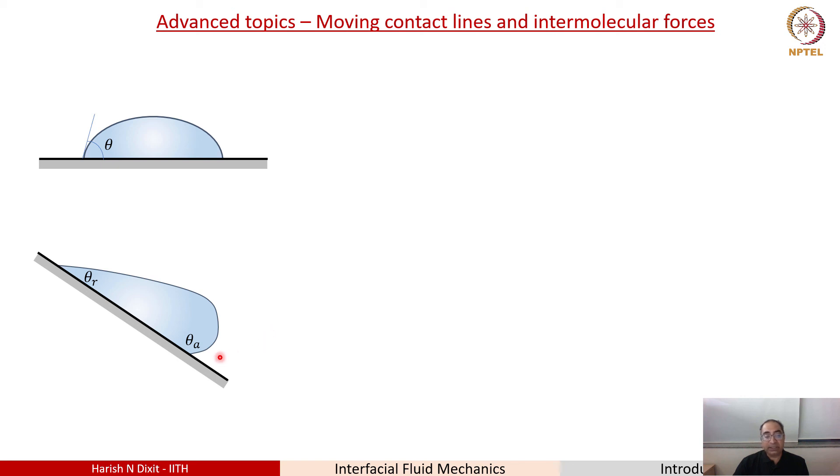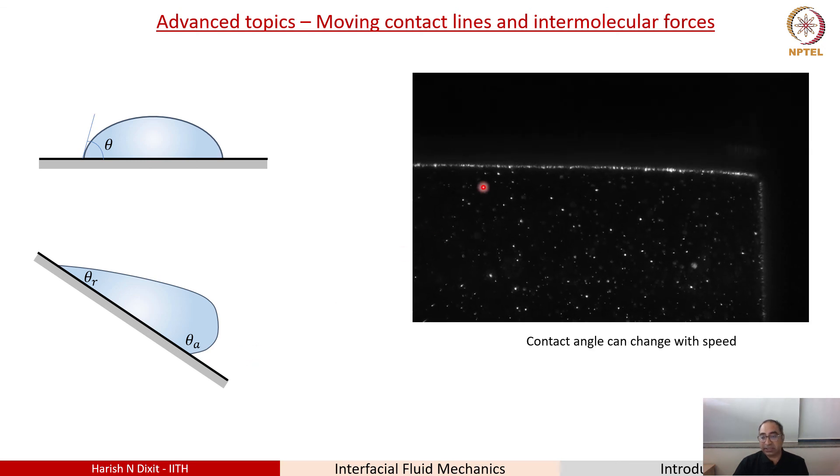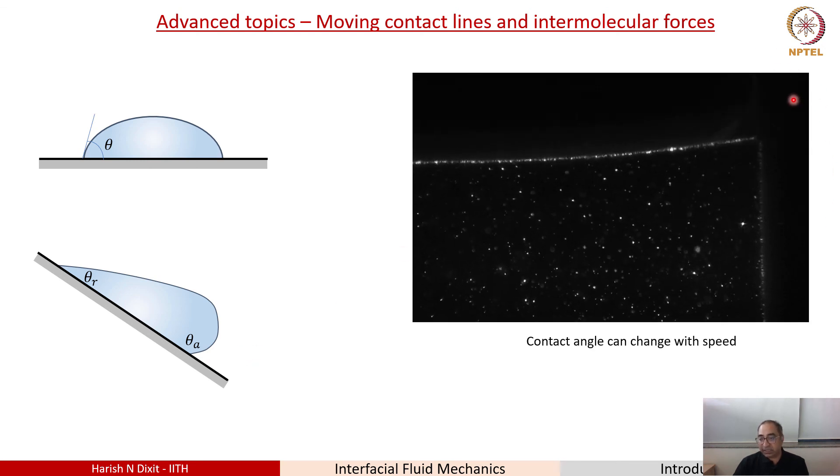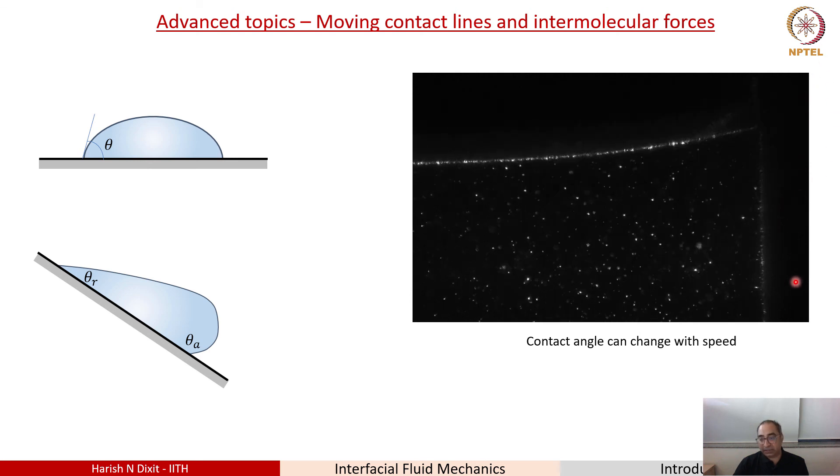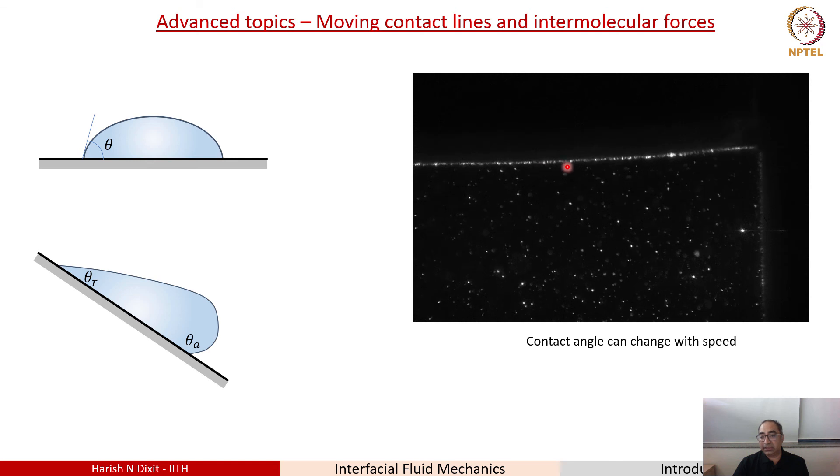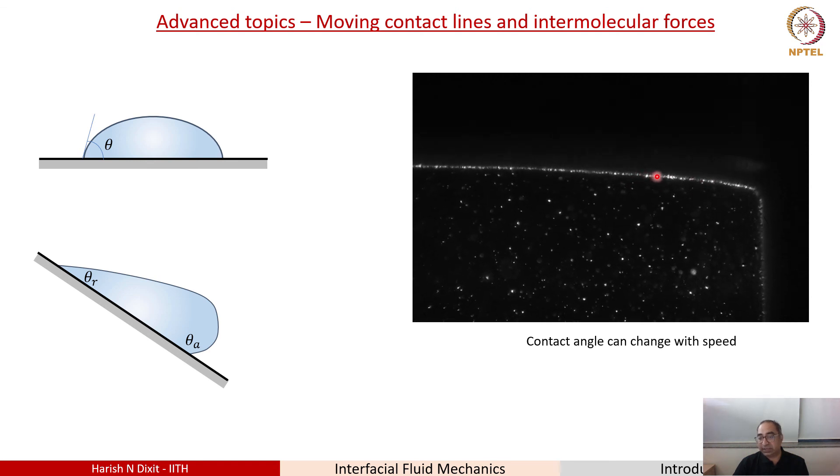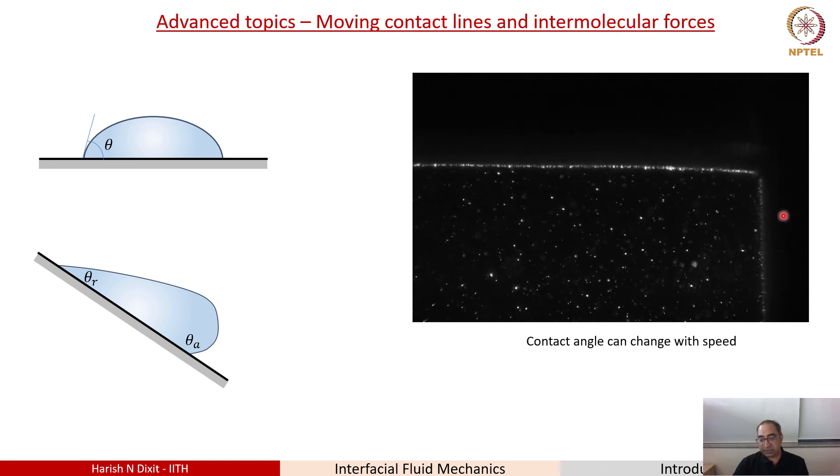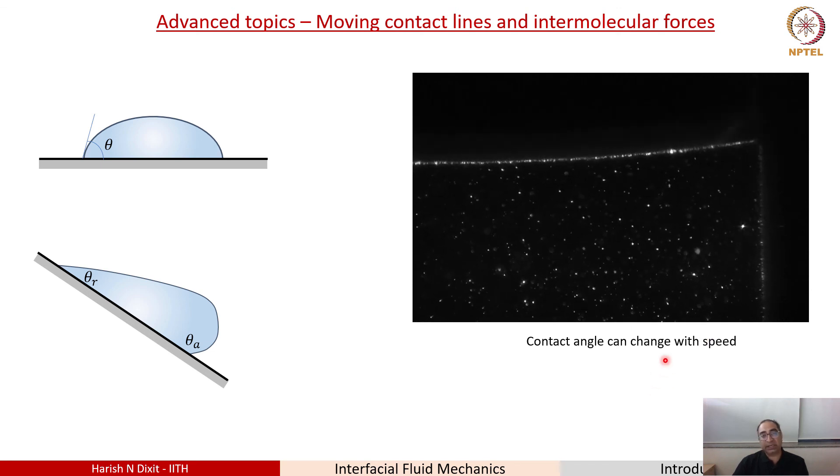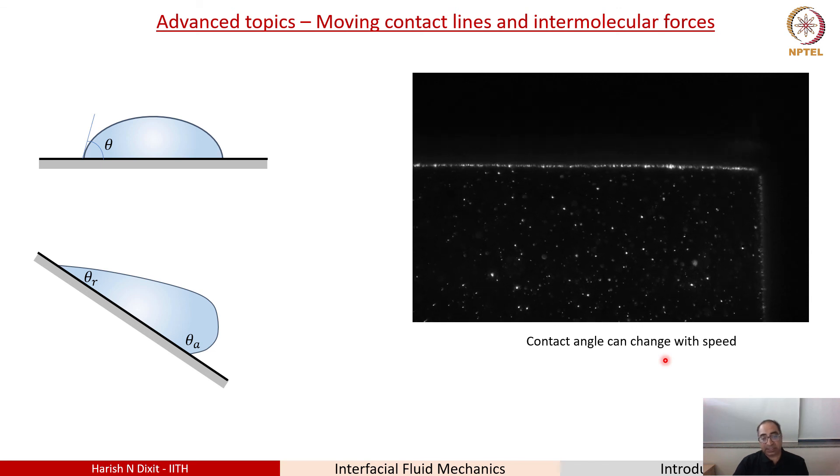So, for this, we can actually study the region very close to the contact line and ask, what is the shape of the interface? What is the angle that the interface is making with the plate? So, here's an example where we're taking a plate, we're dipping it into a fluid, and as we dip it into a fluid, as the speed of the plate increases, you see that the interface deforms, and you can clearly see that the angle is continuously changing. So, what it tells us is that the contact angle can actually change with speed, unlike the static case.